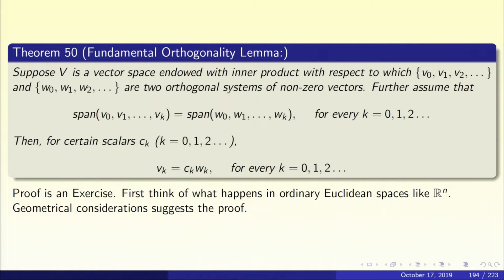What is the Fundamental Orthogonality Lemma? It says: suppose V is a vector space endowed with an inner product, and with respect to this inner product we have two orthogonal systems — V0, V1, V2, etc., and W0, W1, W2, etc. — two orthogonal systems of non-zero vectors. None of the vectors are zero and they are both orthogonal.